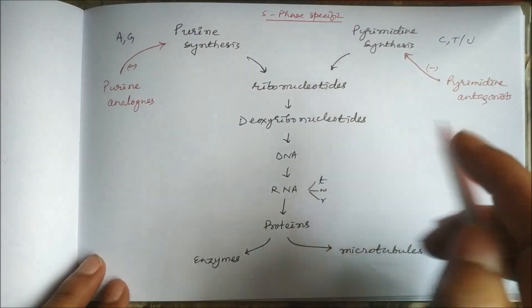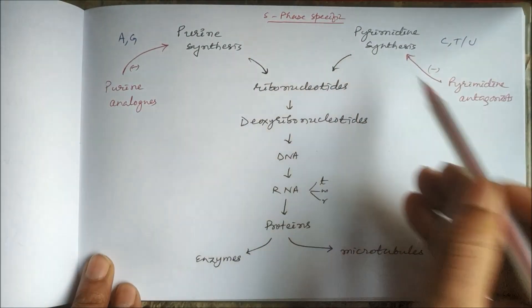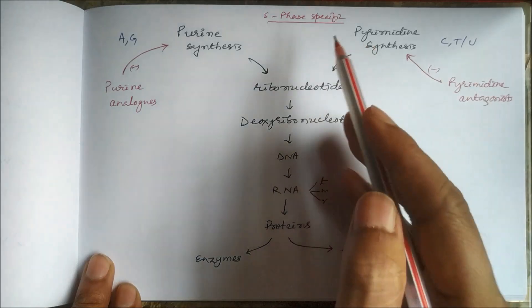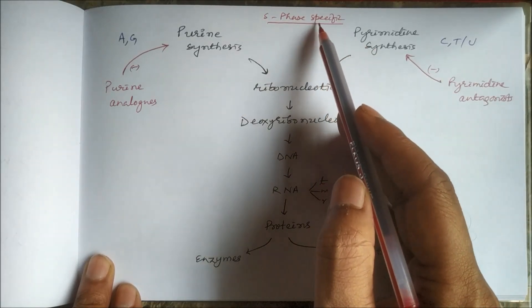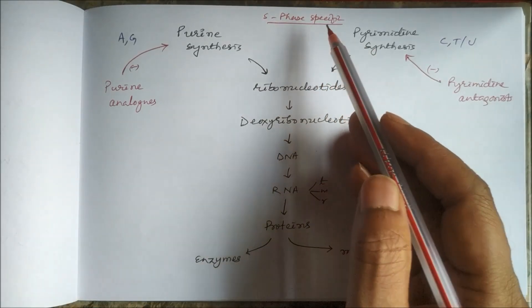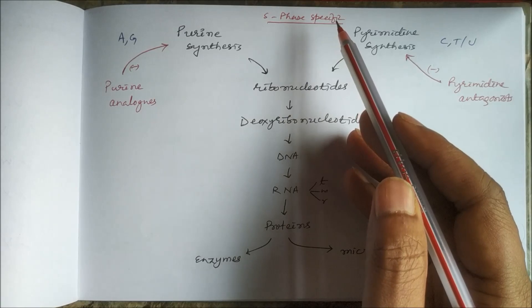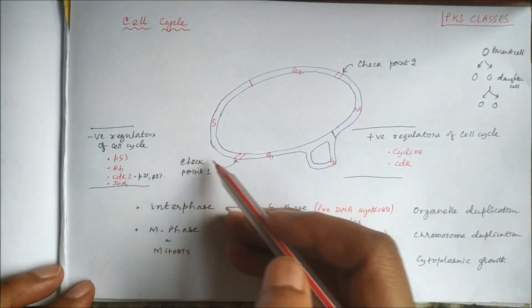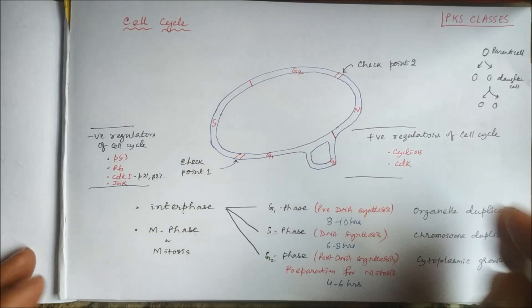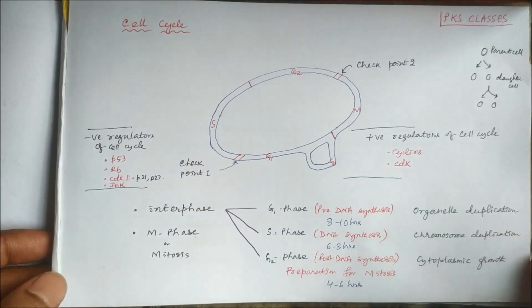These anti-metabolites — purine analogues and pyrimidine analogues — are S-phase specific, meaning they are specific to the cell cycle during the DNA synthesis phase.